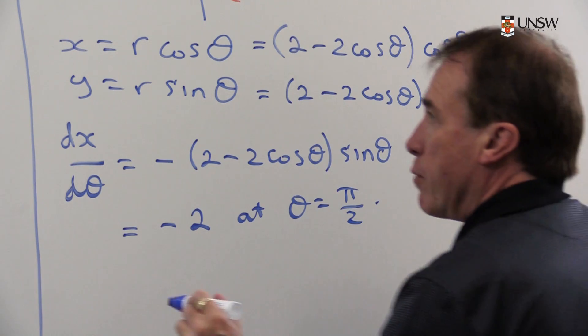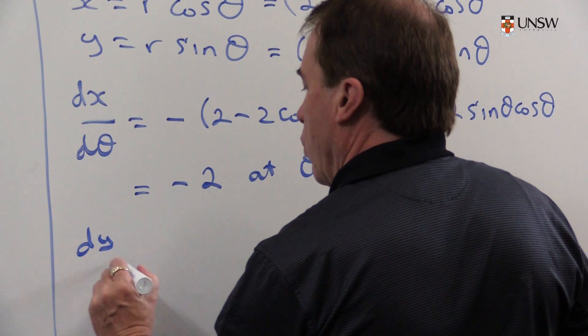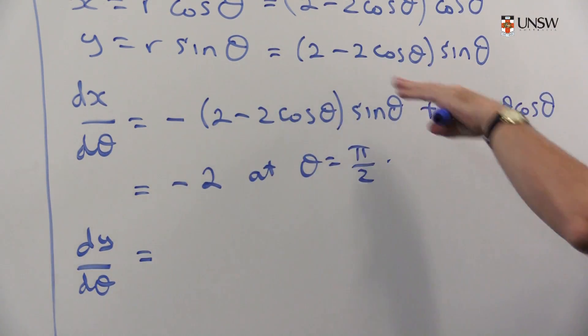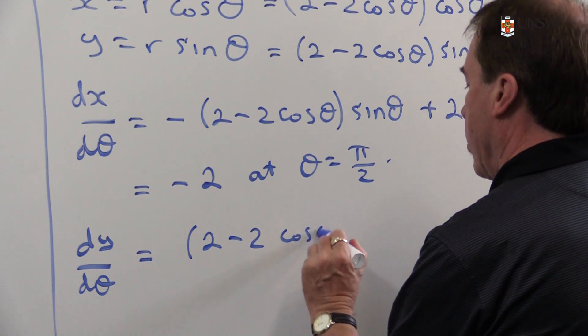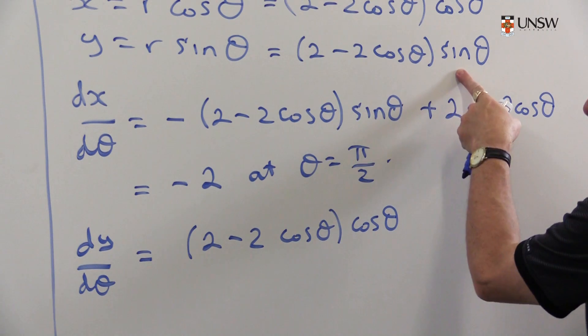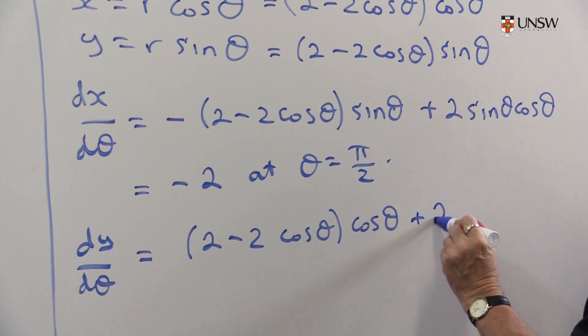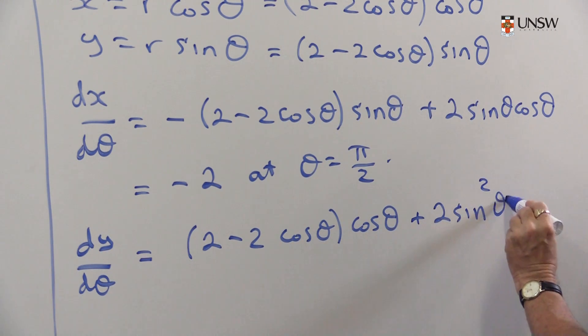Now I'm going to do a similar thing for the variable y, so dy/dθ. I differentiate this again. You could expand it out or use the product rule, which I think I'll use again here. So I get (2 - 2cos(θ)) times the derivative of sin is cos. Copy the first, differentiate the second, so I get +2sin(θ)·sin(θ) = 2sin²(θ).